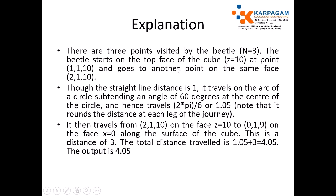It then travels from 2,1,10 to 0,1,9. There is another data point and the face changes. When the face changes, there is no need to use the arc length formula. We find the shortest distance between the two data points. We have 2,1,10 and 0,1,9, and the face X equals 0 along the surface of the cube. The distance along the surface is 3.